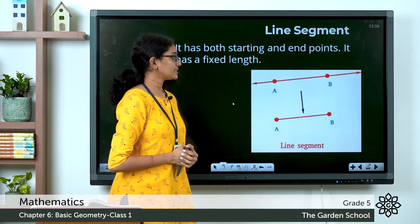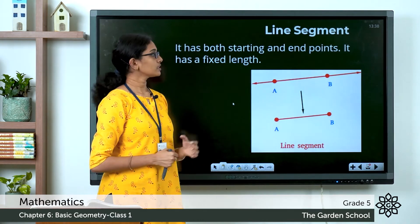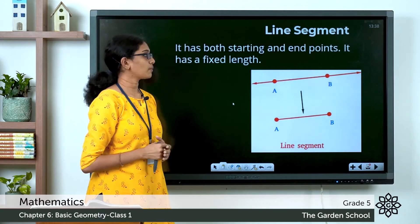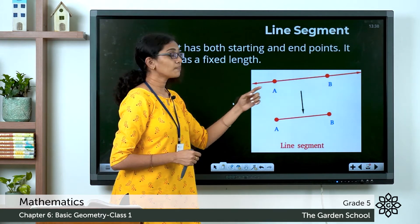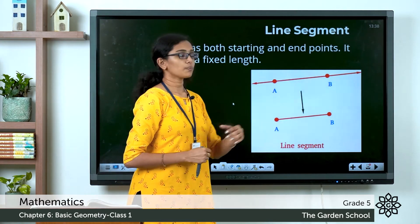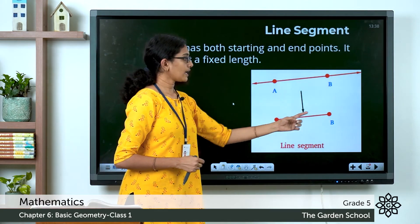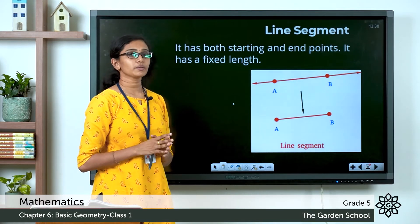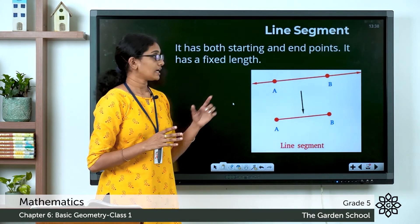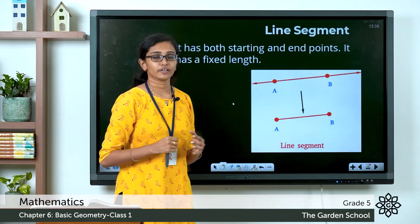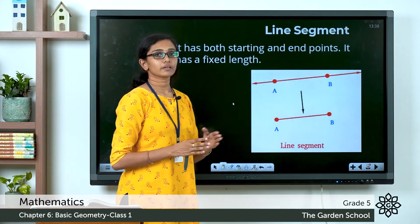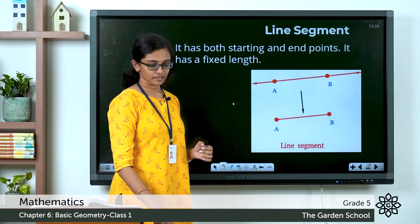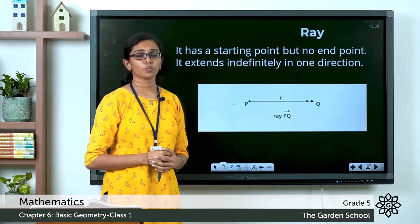You can see line segment AB here. A line segment has both a starting point and an end point — it starts from point A and ends at point B. It has a fixed length. A line extends indefinitely, whereas a line segment has a definite length which can be measured.